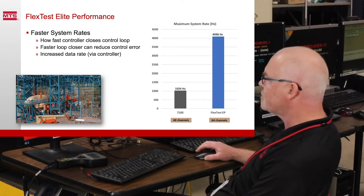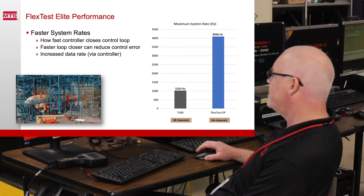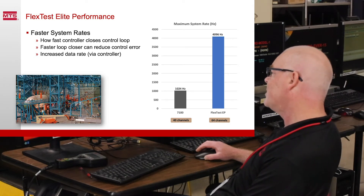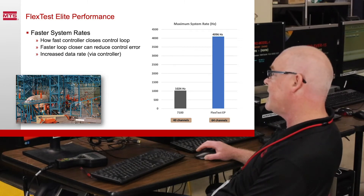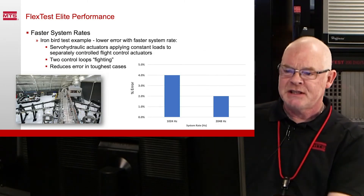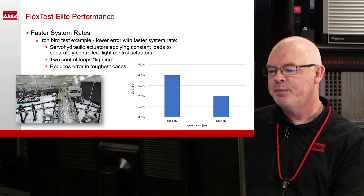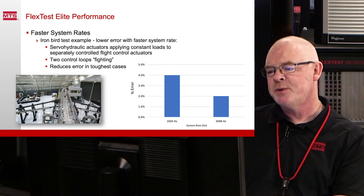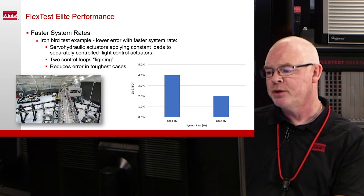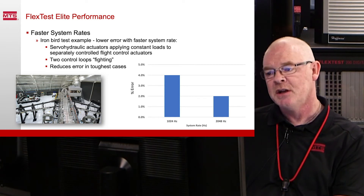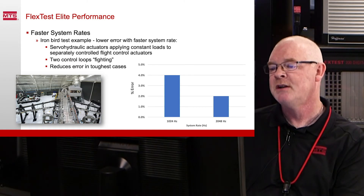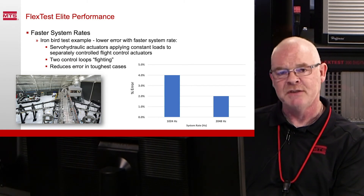Another benefit is faster system rates — that's how fast we can close the control loop. Faster loop closure can reduce controller error and increase data density from the control system, since the maximum control loop rate determines the maximum rate of data out of the box. Faster system rates improve the error experience through testing; we're making adjustments to the control loop at 2048 Hz rather than the standard 1024 Hz on the 7100 processor, giving an immediate increase in test accuracy.